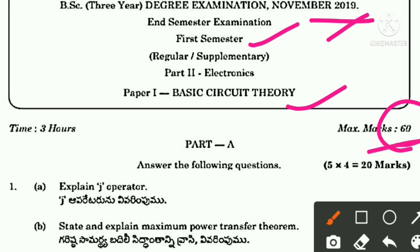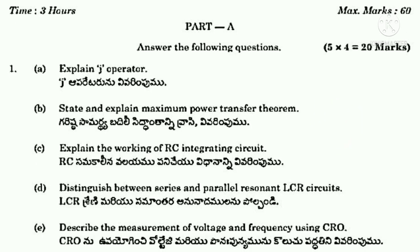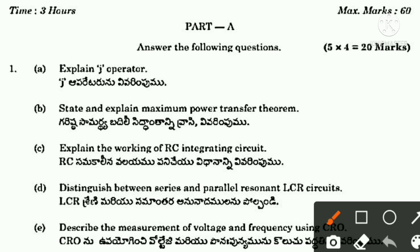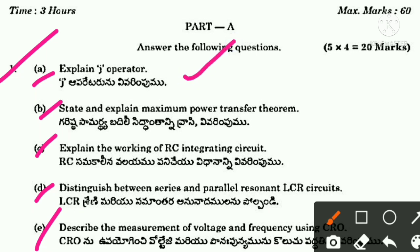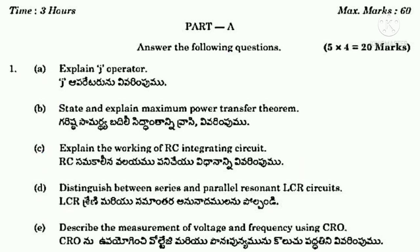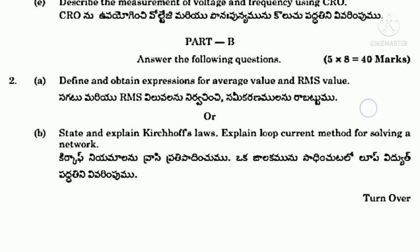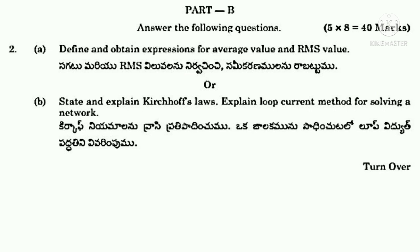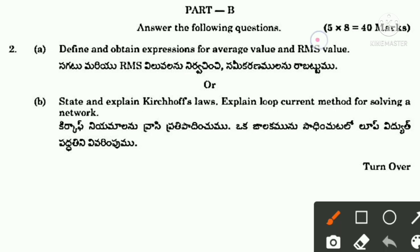Now discussing the previous question paper. Part A: answer the following questions — 5 questions total. First question: explain J operator. From our short questions list: state and explain maximum power transfer theorem, explain the working of RC integrating circuit, distinguish between series and parallel resonant LCR circuits. These three questions are already in our list. Another question: describe the measurement of voltage and frequency with CRO. Each question in Part A carries 8 marks, making 40 marks total.